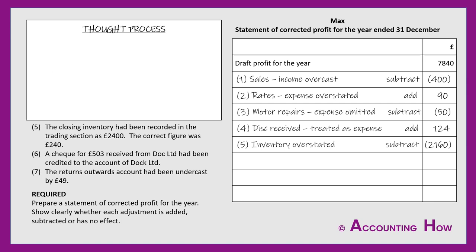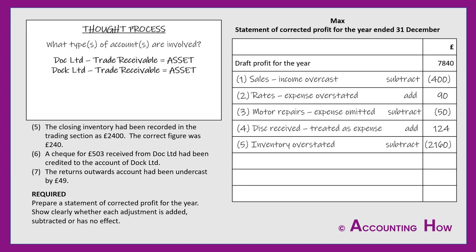Error six: a cheque for £503 received from DOC without a K Limited had been credited to the account of DOC with a K Limited. Both are trade receivables, which are assets, and the bank is also an asset. All accounts involved are assets, which are only in the statement of financial position — not the income statement. So yes, it's an error that needs correcting, but it won't affect the profit. Make sure you state clearly 'no effect,' so the examiner knows you're confident rather than simply leaving it out.